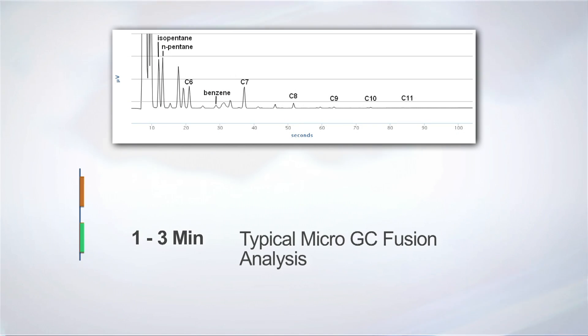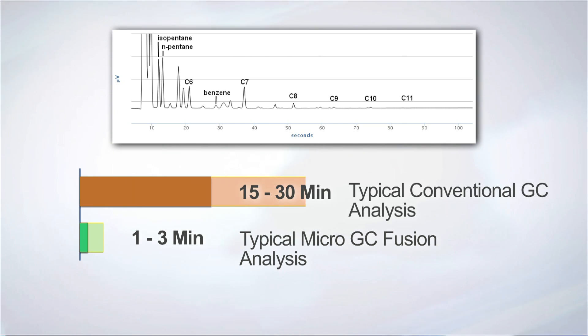A typical Fusion analysis is 1 to 3 minutes, compared to 15 to 30 minutes for conventional GC analysis. The improved sample throughput results in significant saving in analysis cycle time.